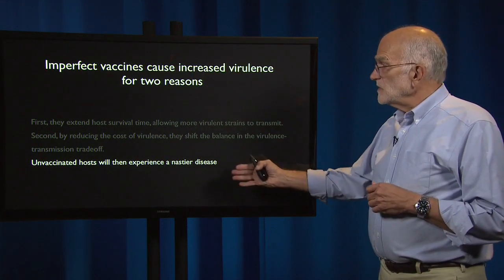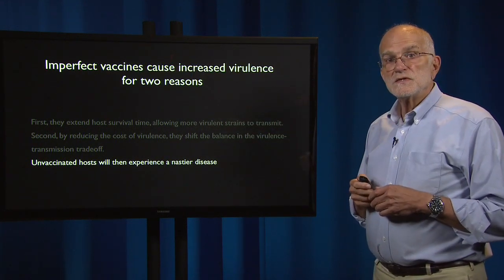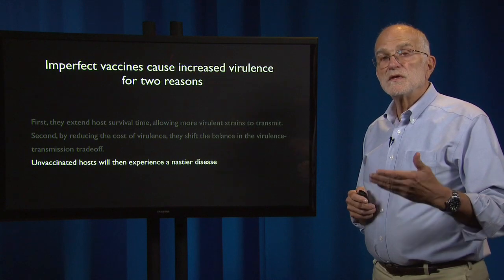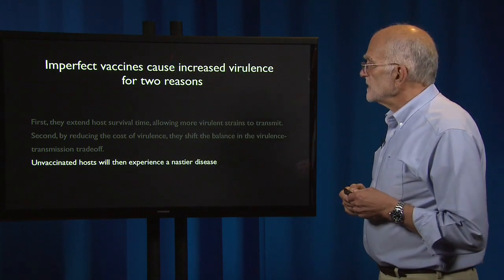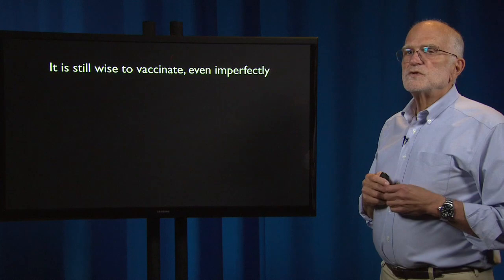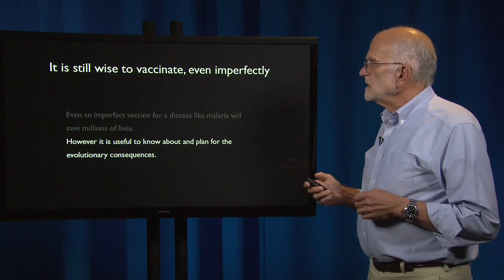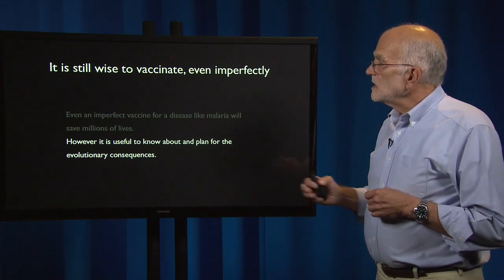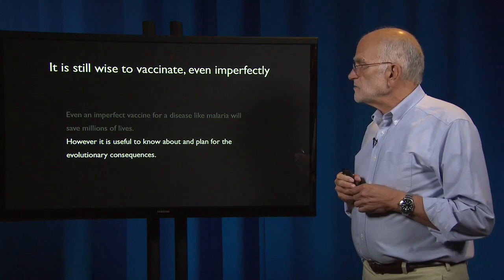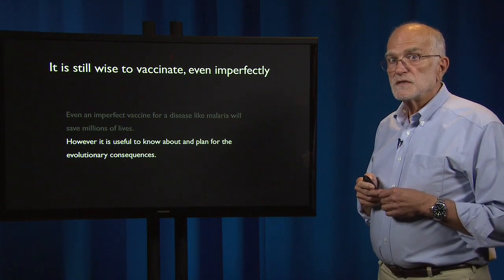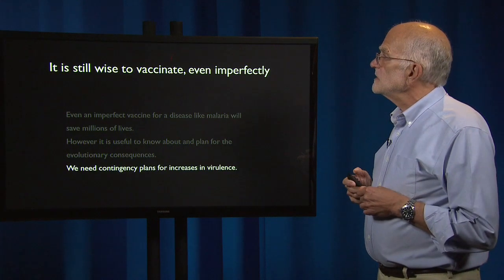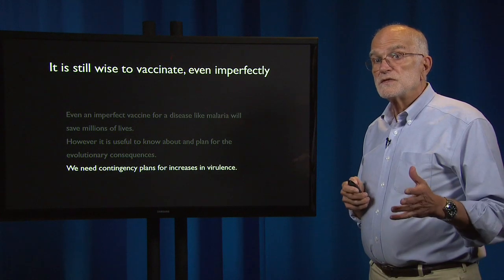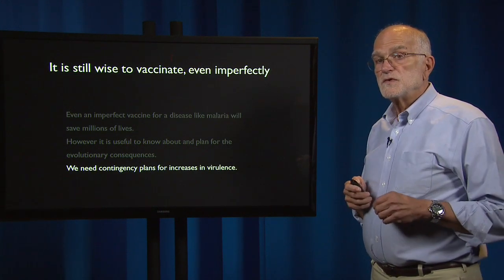Unvaccinated hosts in this scenario will then experience a nastier disease once the pathogen has evolved in response to a vaccine campaign with an imperfect vaccine. That doesn't mean we shouldn't vaccinate — it is still wise to do so, because even an imperfect vaccine will save millions of lives. However, it is useful to know about and to plan for the evolutionary consequences of imperfect vaccines. We need contingency plans for increased virulence if imperfect vaccines are used.